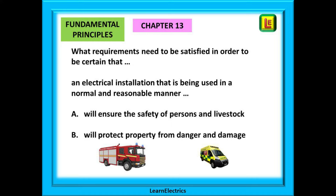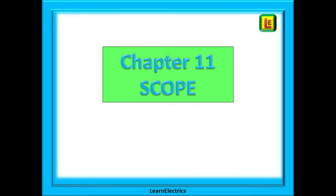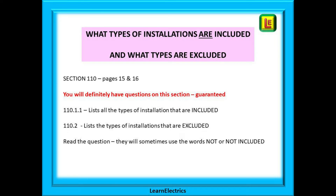Looking at chapter 11 scope and the type of exam questions to expect: this chapter is mostly about what type of installations are included in the regulations and, just as importantly, what installations are not included. You will see these two sections on pages 15 and 16. You will definitely have questions on these sections — they are always included in the exam questions. So get to know pages 15 and 16, and please read the question carefully.